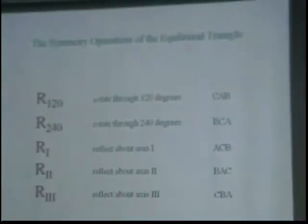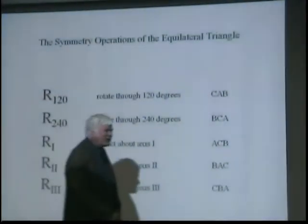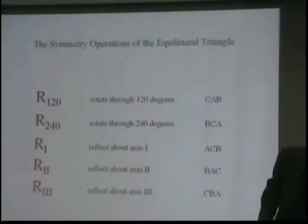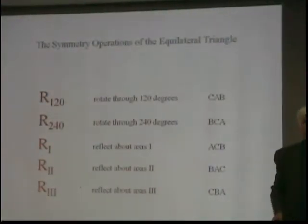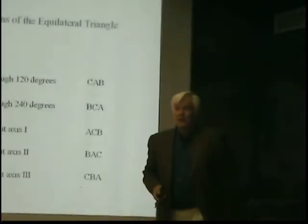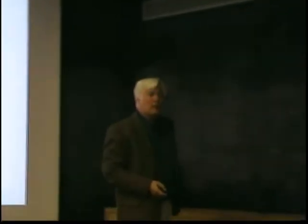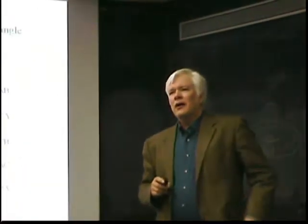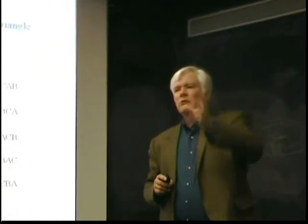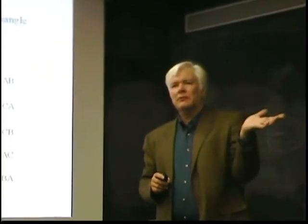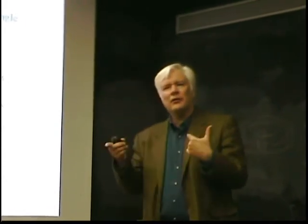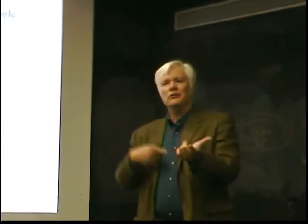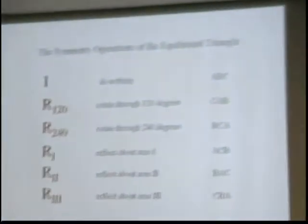So, here we are. We have the symmetry operations of the equilateral triangle. But are we missing one? Is there one, perhaps, that we didn't think of that's just under our noses? Do nothing. What if we do nothing? We sort of already did do nothing when we did 360. In other words, a rotation through 360 is the same as doing nothing. And we ought to count that because it helped us to figure out that 480 and 120 are the same thing.